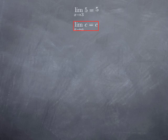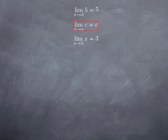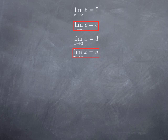In general, if we have a constant function c, its limit at any value a is c. Another very basic fact is that if x is approaching 3, x is approaching 3 — we're really not saying much here. More generally, if x is approaching a, then the limit of the function x at a is a.